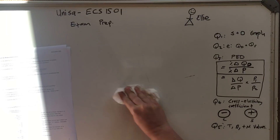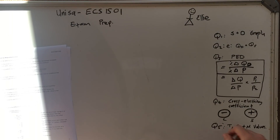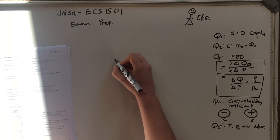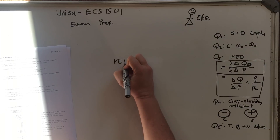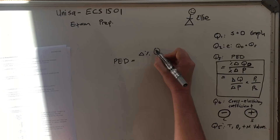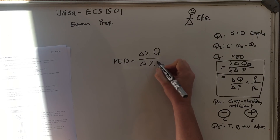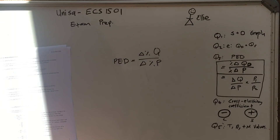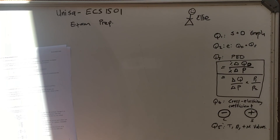Now we're going to question three: price elasticity of demand. Just keep your head and everything will be fine. There are two ways they can ask the question. They can give you percentage changes, or they can give you actual numbers. If they give you percentage changes, then price elasticity of demand equals the percentage change in quantity over the percentage change in price.